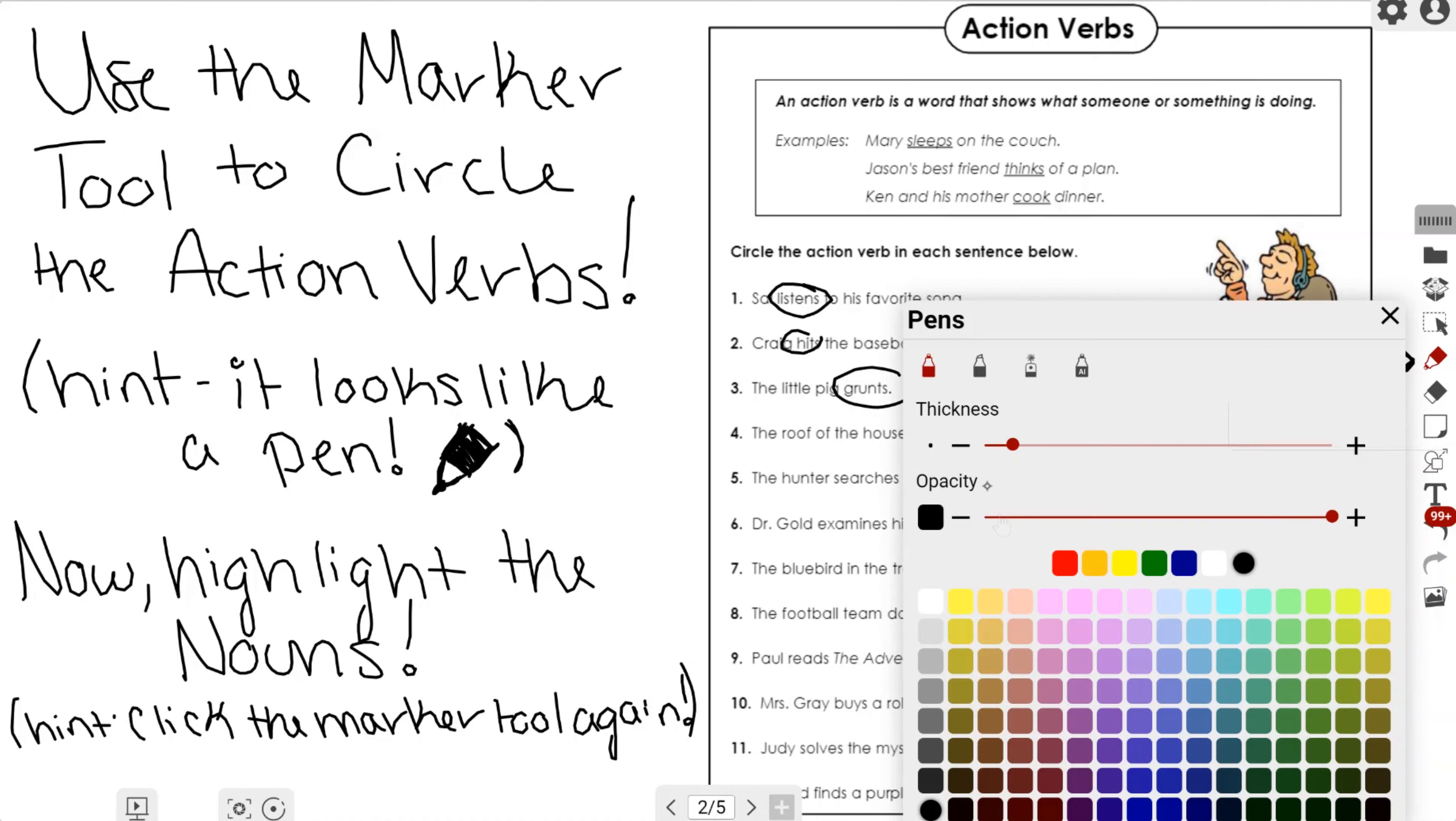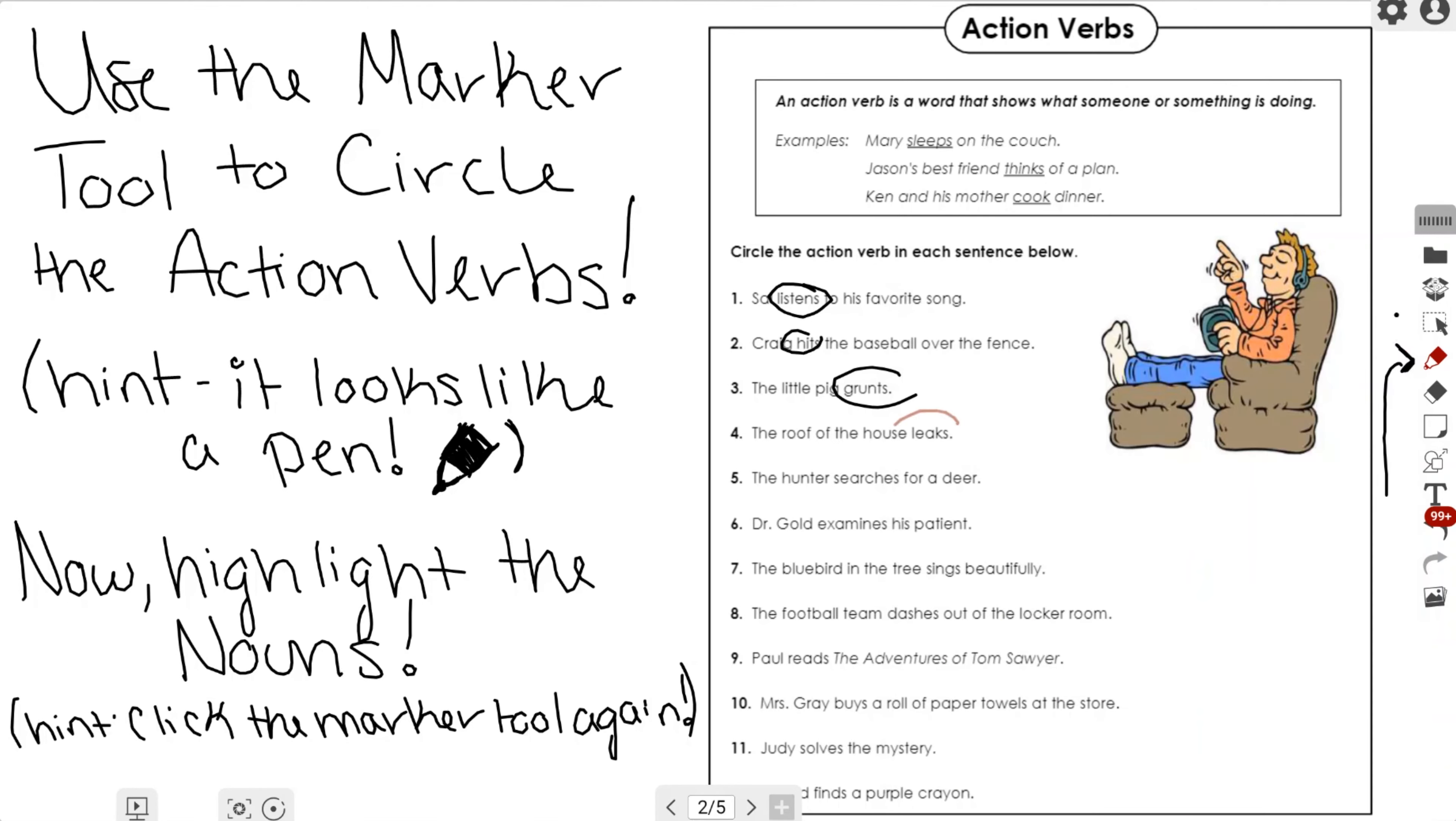As you can see, I have a ton of different options I can choose from, and this is where the magic happens. I have a ton of different colors I can choose from, a line thickness and opacity scale, and I can select a different color in order to write using the pen tool.